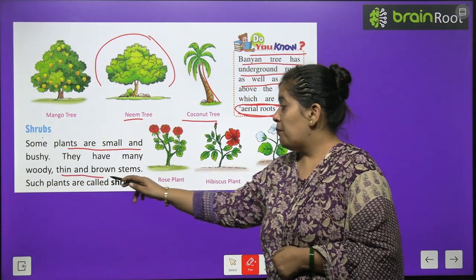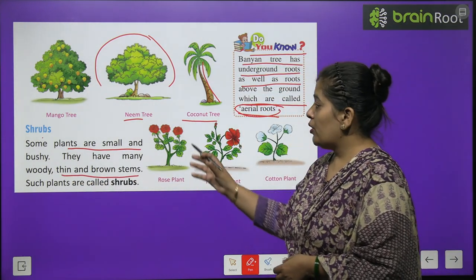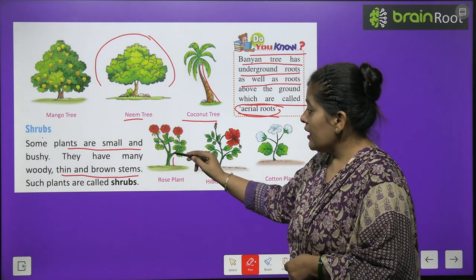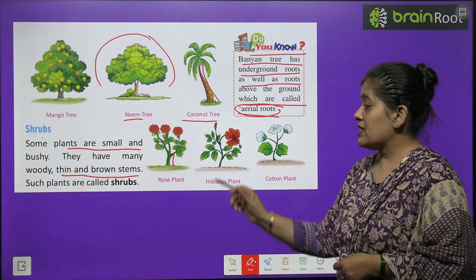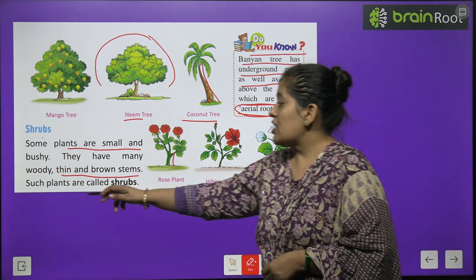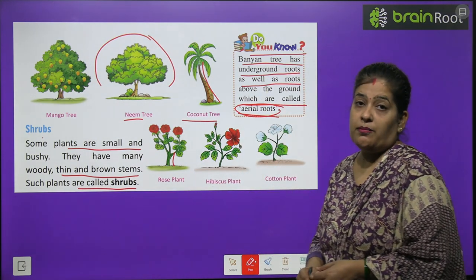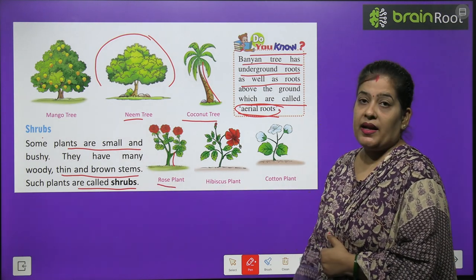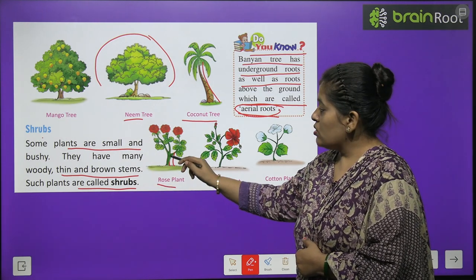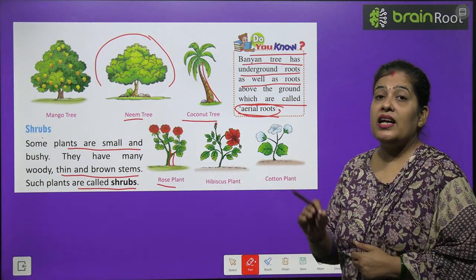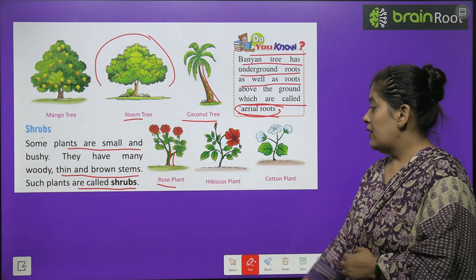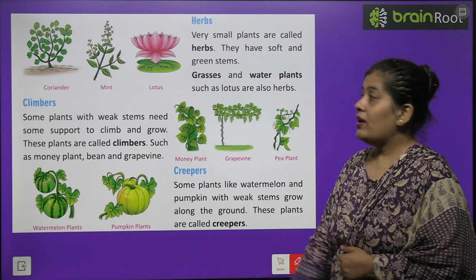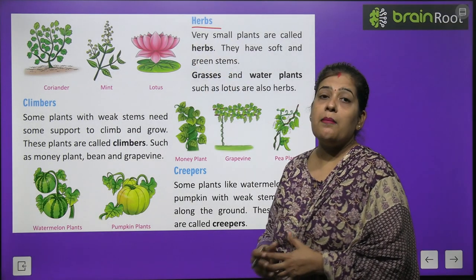Shrubs have many woody, thin and brown stems. Some plants are small and have thin woody brown stems called tana (stem). Such plants are called shrubs. For example, rose — the rose plant is small with a stem and thorny, serrated leaves. Hibiscus and cotton plant are also shrubs. Now we will learn about herbs.